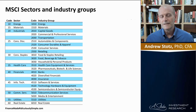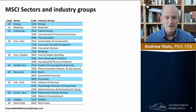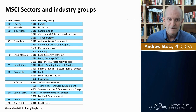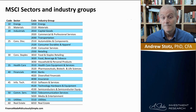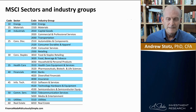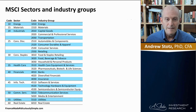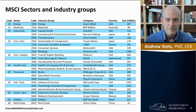Each of those sectors has industry groups. Energy and materials each have a single industry group also called energy and materials. Industrials can be capital goods, commercial and professional services, or transportation. Communication services can be telecommunication services — like mobile phone companies — or media and entertainment. Companies like Union Pacific fall under transportation, Toyota under automobiles, McDonald's under consumer services in consumer discretionary, and Nestlé under food and beverage.